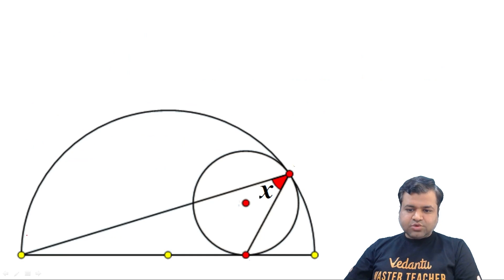So let's see the question. This is our question, in which you can see that there is a semicircle which is the diameter given, and a small circle that touches it at some point and has angle x.